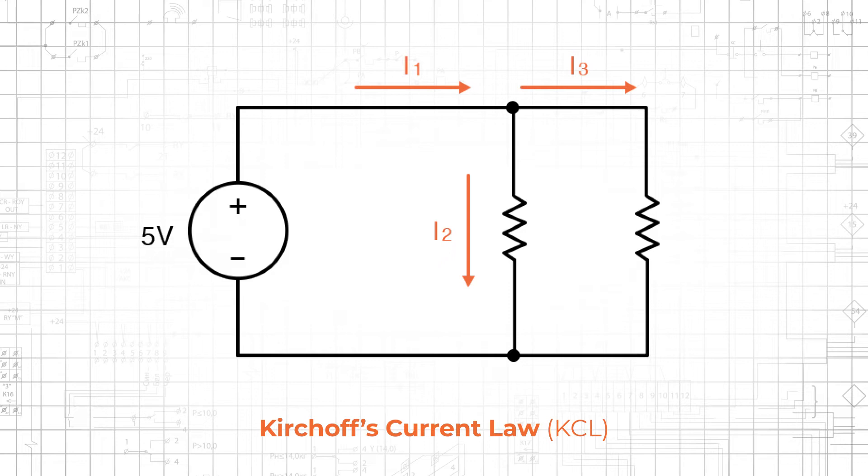In this example, if we measure I1 and I2, we can calculate I3 because I1 equals I2 plus I3.